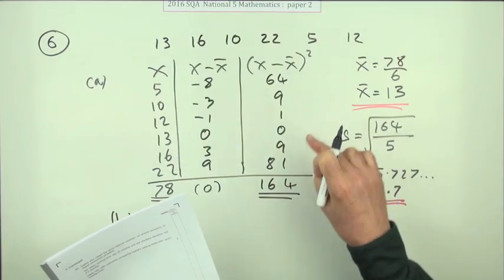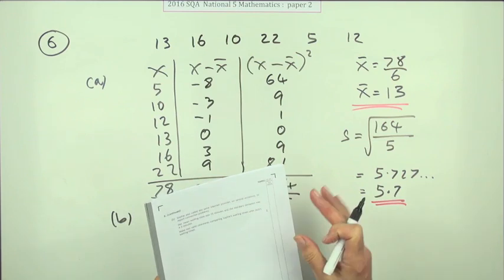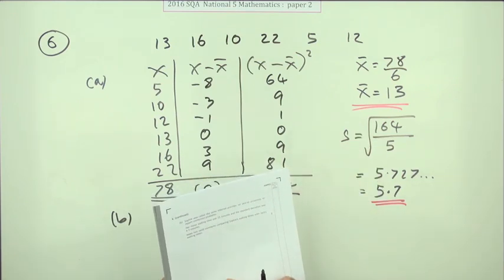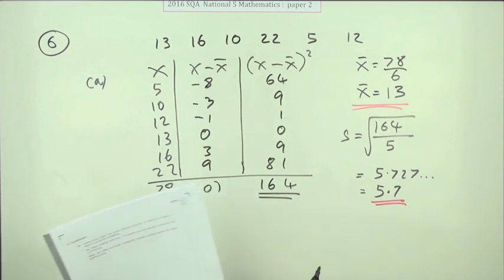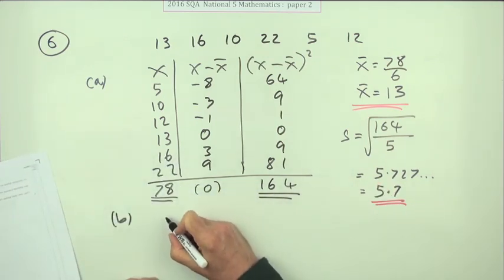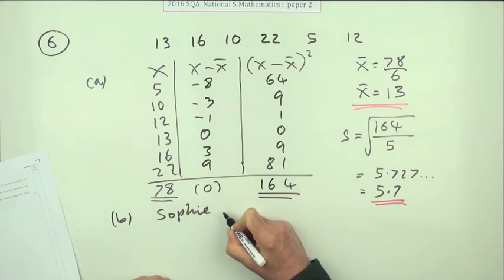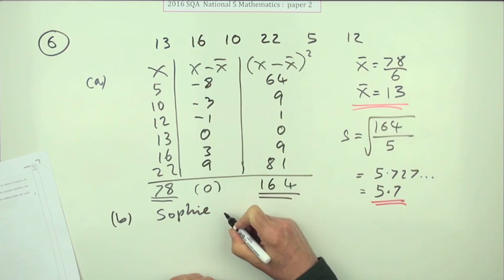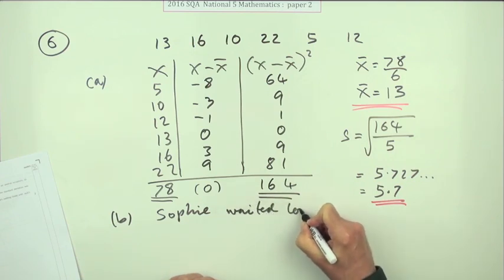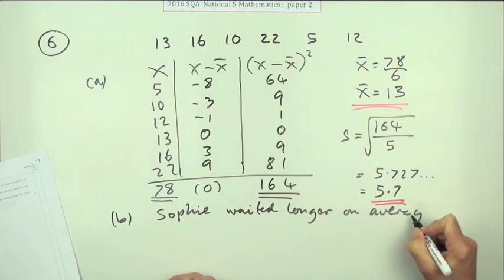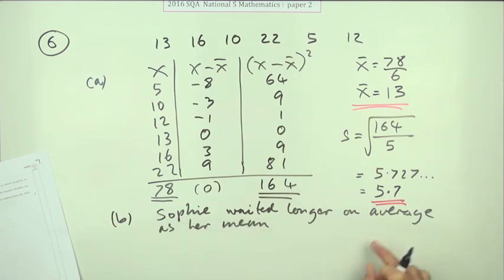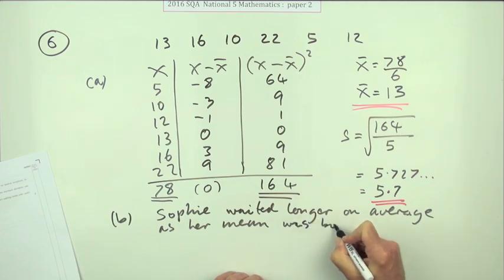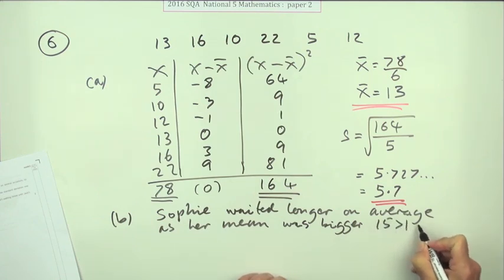Part B then. Sophie also had the same problem, but her mean waiting time was 15 minutes and her standard deviation was 4.3. Make two valid comments. Let's take the mean first of all. Sophie's mean was higher at 15, so that means Sophie waited longer on average. The mean as a measure of average was bigger because hers was 15, greater than 13.